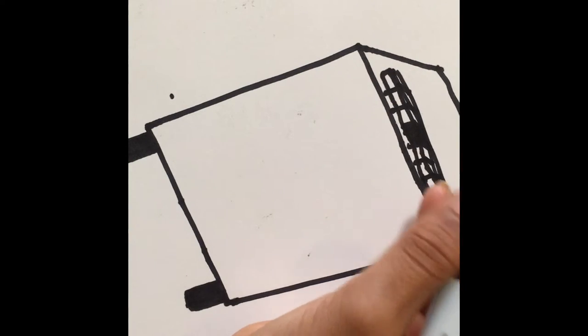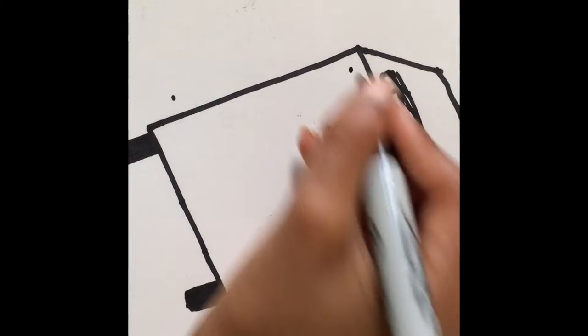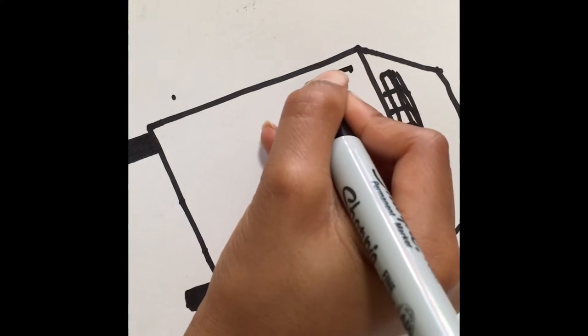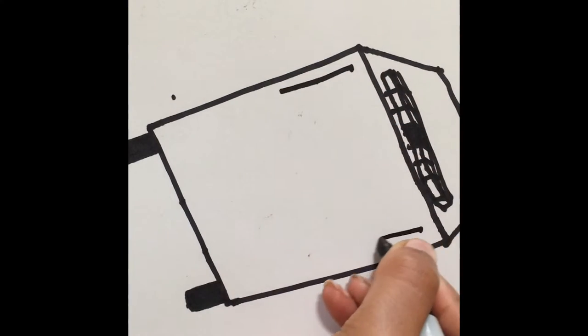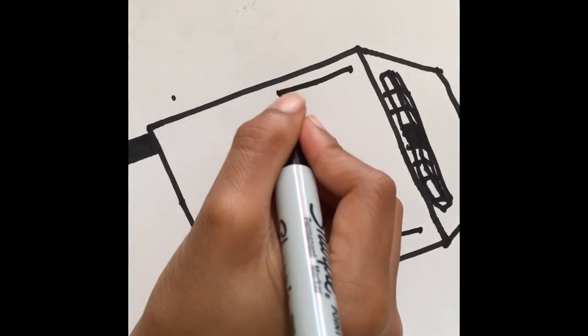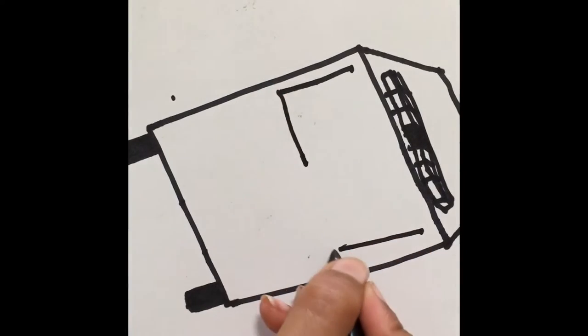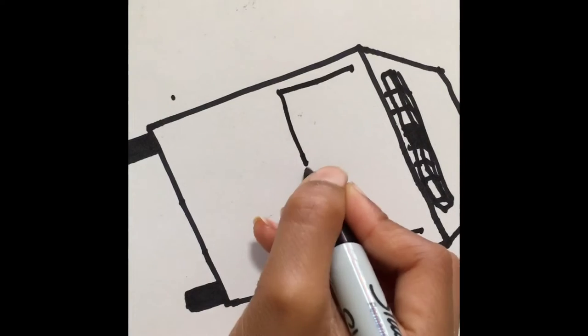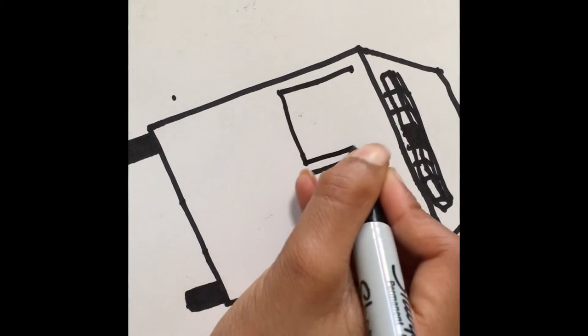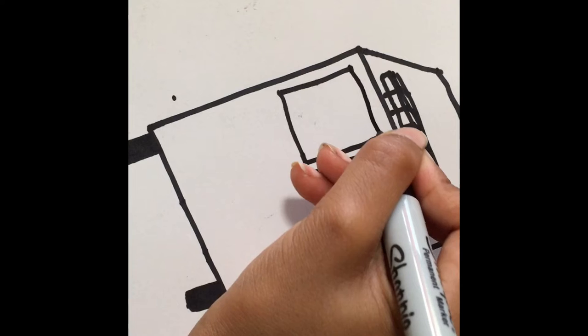Here we are making the small two squares which are going to be the windows of the fire truck where the fireman is driving the fire truck.